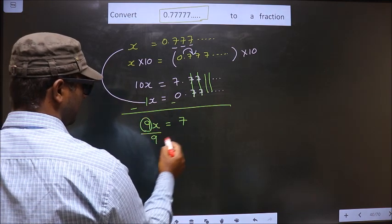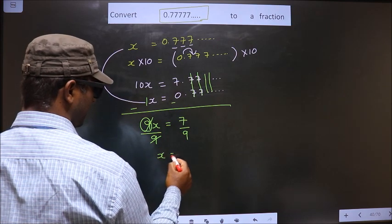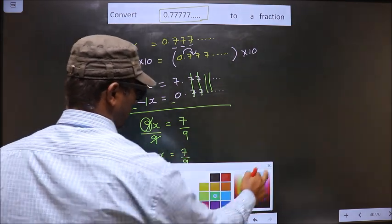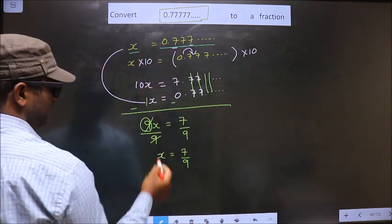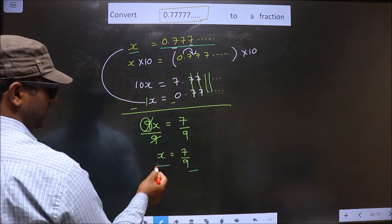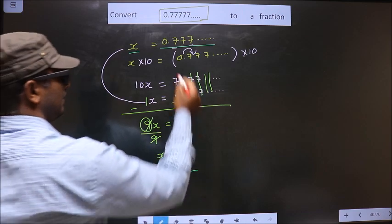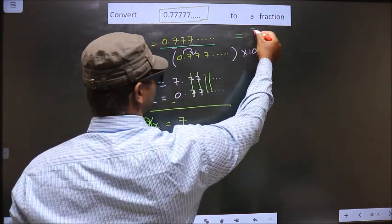Now, earlier we considered the recurring decimal to be x. Now we got this fraction equal to x. That implies one thing: that this recurring decimal equals 7 by 9. So this is our answer.